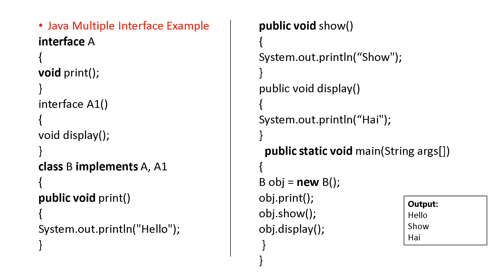Here is an example of multiple interfaces — how multiple interfaces are implemented into a class. The first interface is A with the method 'print', and the next interface is A1 with the method 'display'.